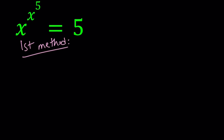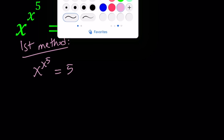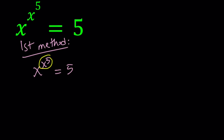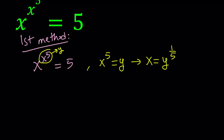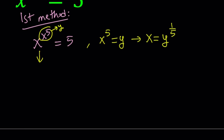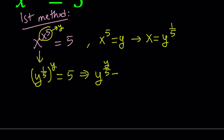My first method involves some substitution, so let's go ahead and rewrite our expression. I want to call this something else, like y. So now I get x to the 5th equals y, which implies that x can be written as y to the power 1/5, or the 5th root of y. Now we can substitute that for x: we write y to the power 1/5, and that is to the power x to the 5th, which is y. Now I'm going to multiply the exponents, giving y to the power y over 5 equals 5.